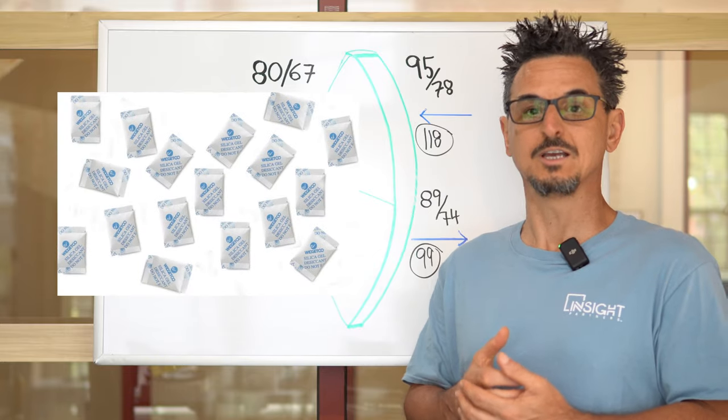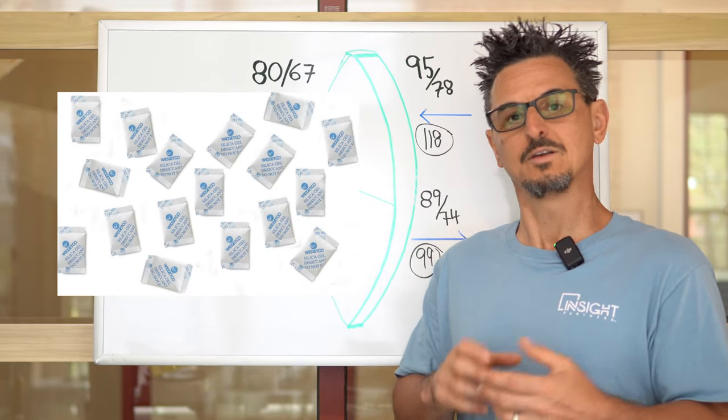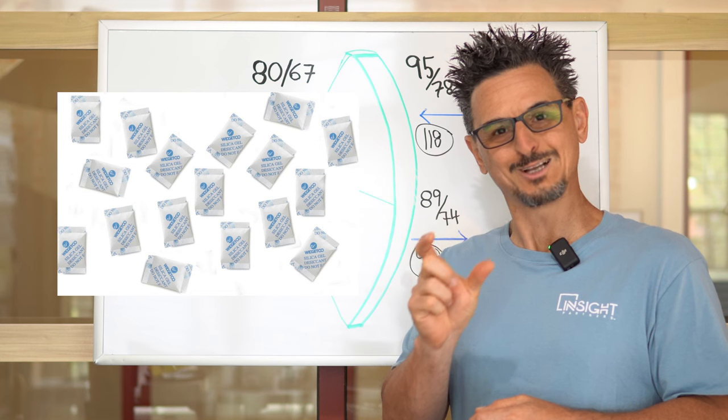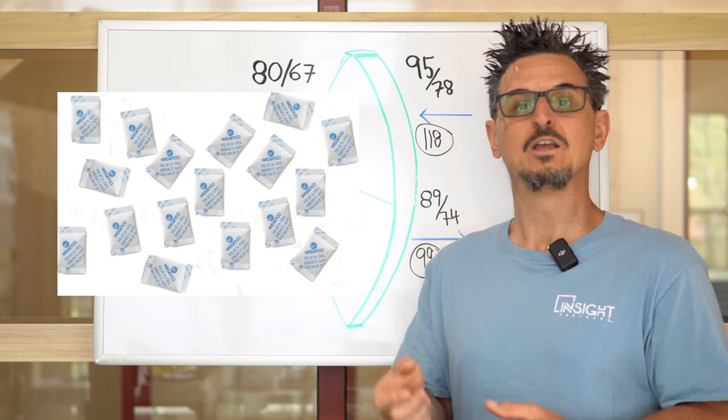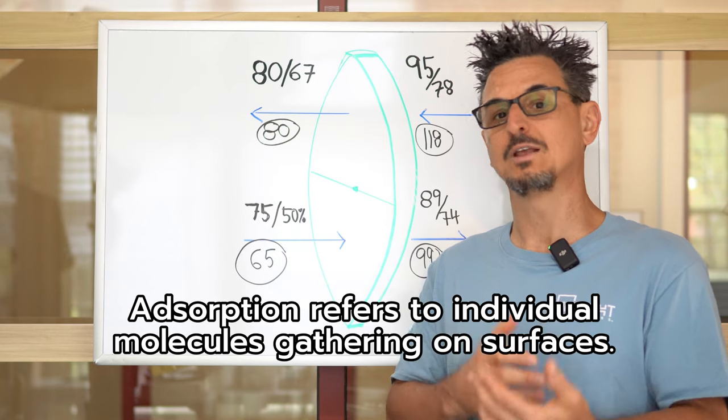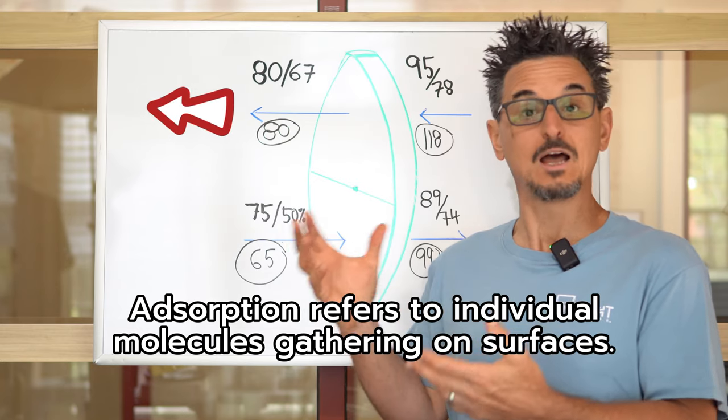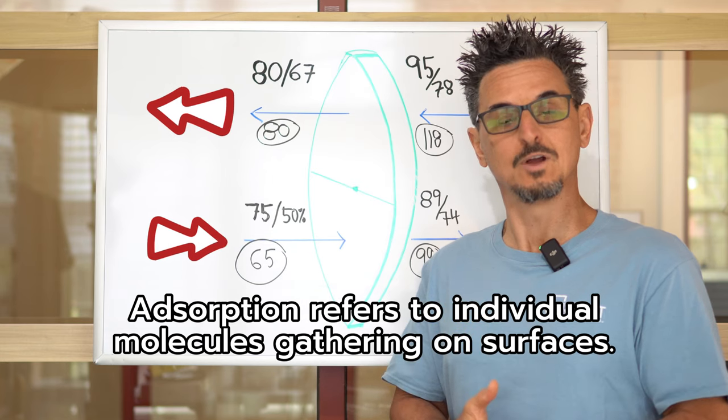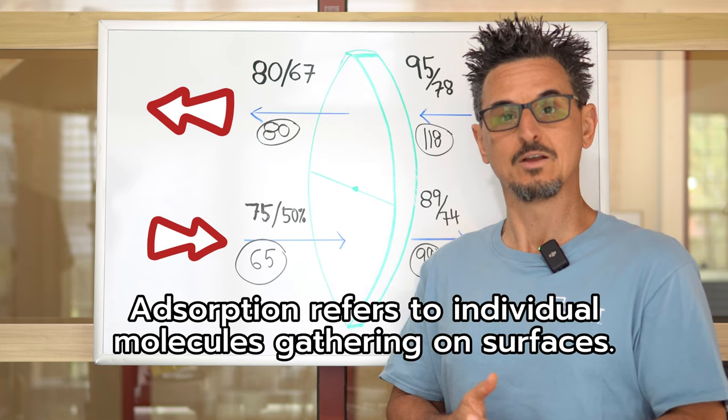Heat wheels basically use a desiccant technology, which is very similar to if you've seen the little pack of silica gel that come in your sneakers. So it adsorbs moisture, and it also takes that and transfers heat as well from one very hot humid airstream to a relatively cool and dry airstream.